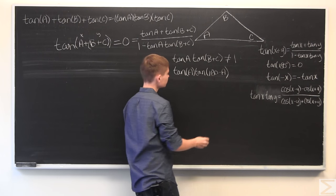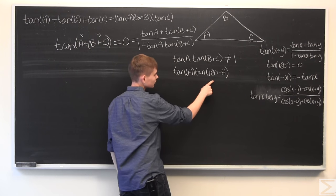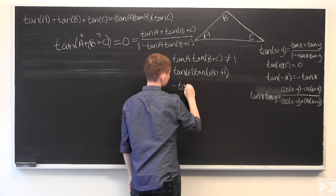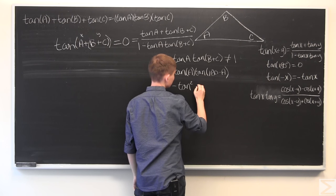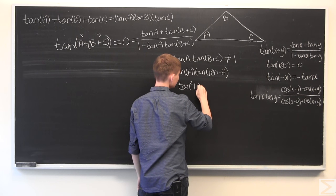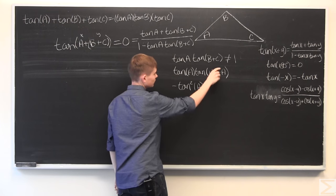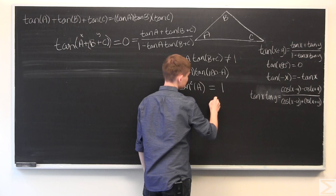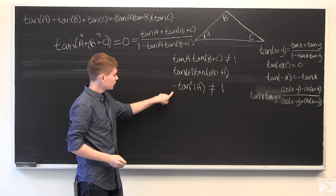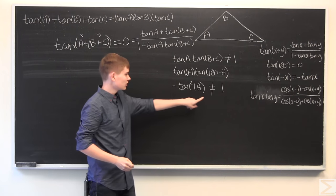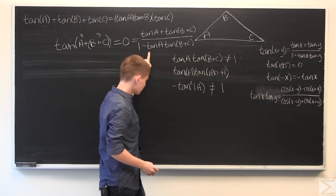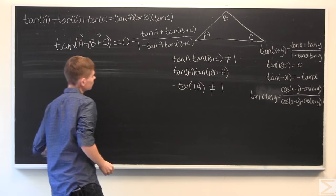Which is equal to B plus C. And, using this fact, this is equal to the negative tangent squared of A. And, we have to show that this isn't equal to one, which it can't be, because this is a squared number and it's negative, which means that it could never be positive one. So, this holds true.